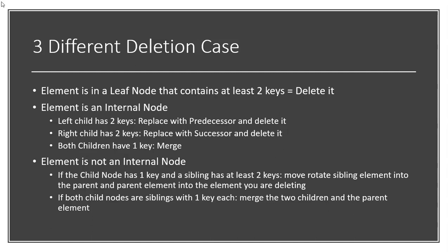If the element is not in an internal node, follow the proper nodes to find that element. To ensure all nodes we traverse down will have at least two keys, we have to perform one of the following before descending into a node. If the child node has at least one key and the sibling has at least two keys, move an element down from the parent into the child with the one key, and move the element from the sibling into that parent, essentially doing a rotation.